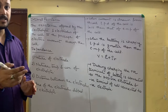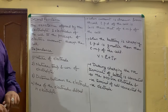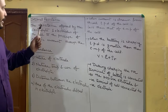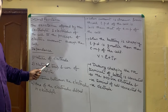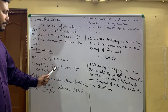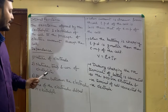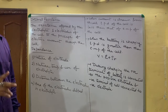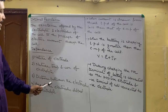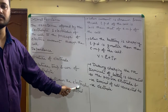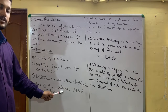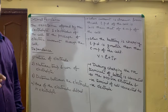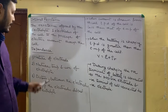Internal resistance किन चीज़ों पर depend करता है — पहला point: nature of the electrode. दूसरा: nature, temperature and concentration of the electrolyte पर depend करेगा. तीसरा: distance between the electrodes पर depend करेगा. चौथा: area of the electrodes dipped in electrolyte पर depend करेगा.